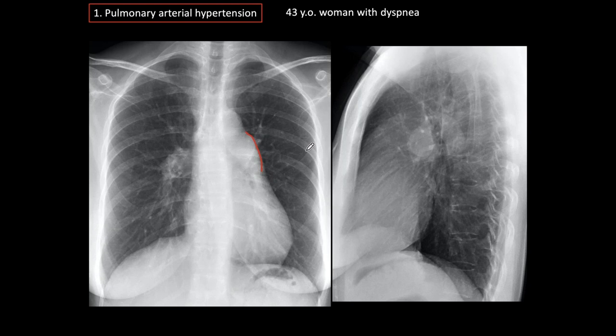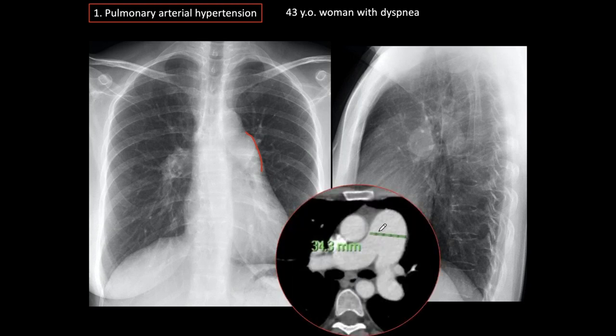This is one of the most common conditions we are going to find on the plain film when we see convexity of the pulmonary artery segment. This is the CT of the patient showing the disparity between the size of the aorta and the size of the pulmonary artery, which measures almost 35 millimeters. The maximum normal diameter of the pulmonary artery is 29 millimeters before we call it abnormal.